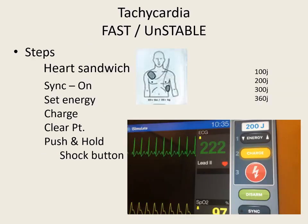Let's go through the steps of synchronized cardioversion. The first step is getting out those pads and making a heart sandwich — right upper chest, left side or anterior-posterior position. Then we're going to turn on the sync button. Once the sync button is in place, you're going to see inverted triangles over those R-waves, or just little tick marks on some monitors.